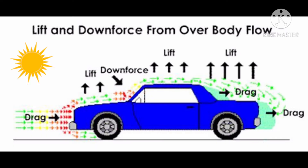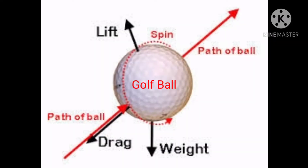Some examples of aerodynamics are cars, bicycle, racing helmet, wind turbines, and golf balls. Aerodynamics is the way air moves around things. Since air is all around us, there are many examples of aerodynamic technology other than the aircraft. Look at golf balls for example.